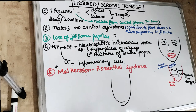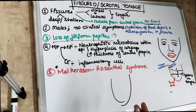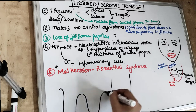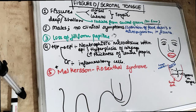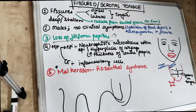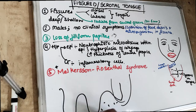Looking at the histopathological view: first, there is loss of filiform papilla from the surface of the mucosa. Second, there is micro-abscess formation within the epithelium. There is hyperplasia of the rete pegs, meaning the rete pegs are increased in number. There is also increase in the thickness of the lamina propria, and in the connective tissue we can see inflammatory cell infiltration.